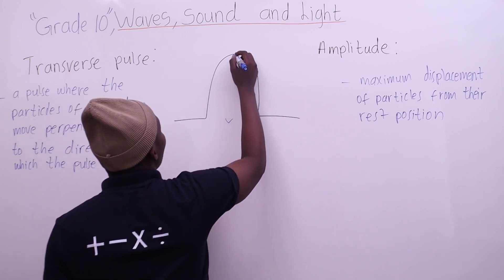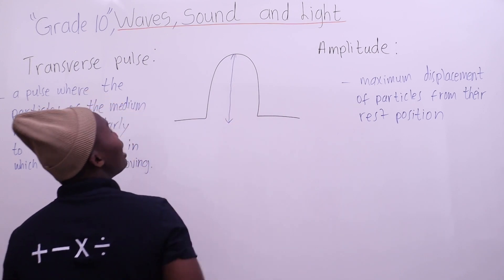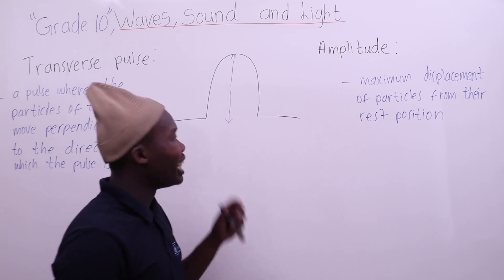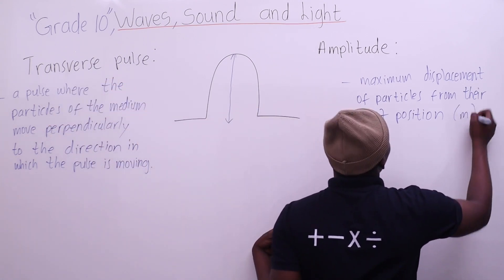This is the distance. This is the amplitude. This is the length. Usually, the unit for amplitude is meters.